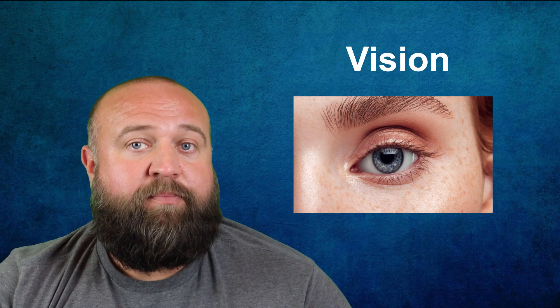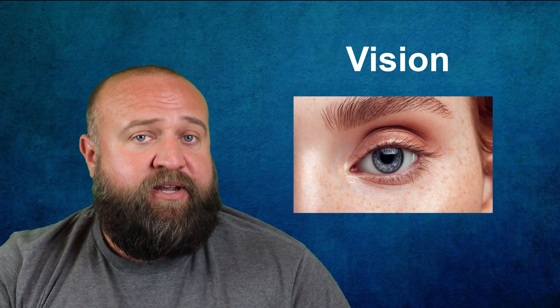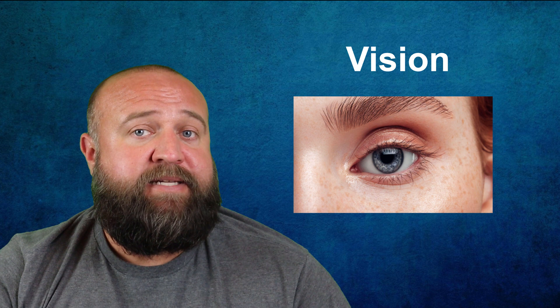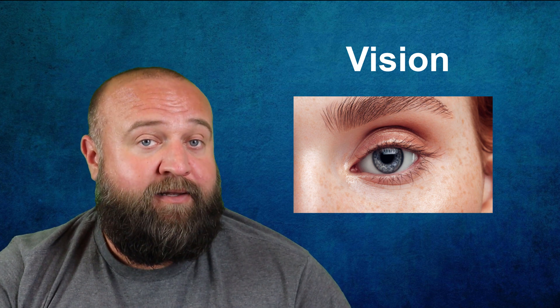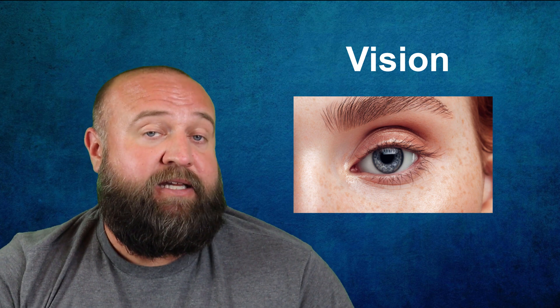As light enters the pupil, it passes through the lens, which is a curved transparent structure that serves to provide additional focus for the light entering the eye. Be very careful with this, because sometimes people confuse the cornea with the lens. Remember that the lens is actually located behind the pupil.